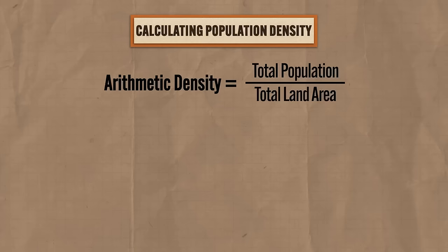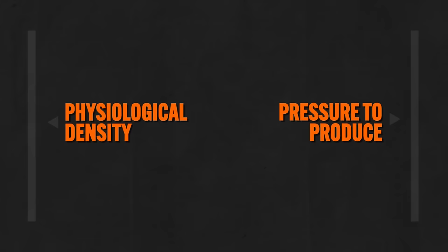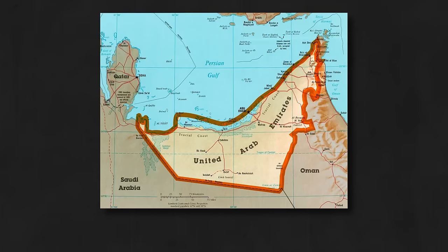A second kind of calculation is physiological density, which is the total population divided by the total amount of arable land — land that can be used for agriculture. This demonstrates whether a population is able to feed itself. The higher the physiological density, the more pressure on farmland to produce enough food. For example, the United Arab Emirates has about 32,000 square miles of land and almost 10 million people, but only about half a percent of that land can grow food because it's in a desert. So the arithmetic density gives 312 people per square mile, but the physiological density is over 6,000 people per square mile.